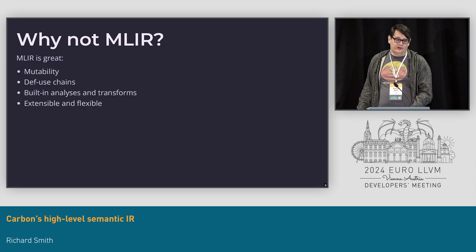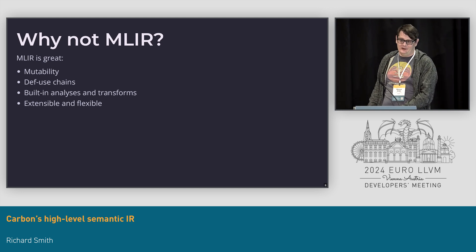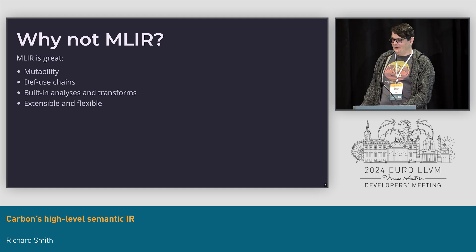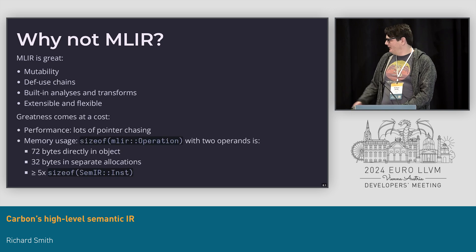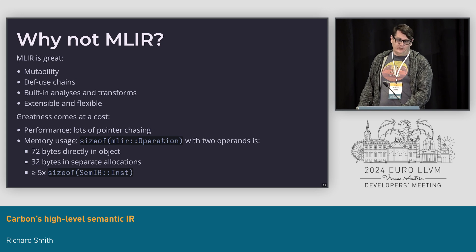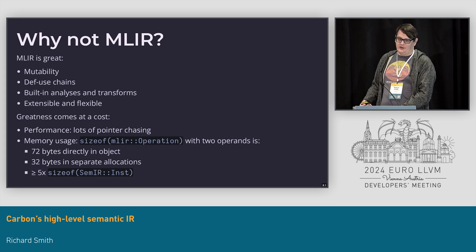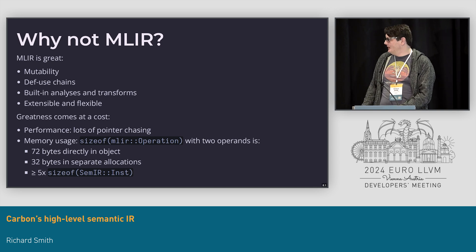A natural question, especially at this conference, is why are we not using MLIR for a new compiler-specific intermediate representation? MLIR is awesome - it's batteries included, super flexible, with all sorts of functionality, power, and extensibility. But all of that comes with a cost. The size of an instruction in Carbon SEMR is about a fifth the size it would be if we represented it in MLIR, and there's a lot less pointer chasing as well.